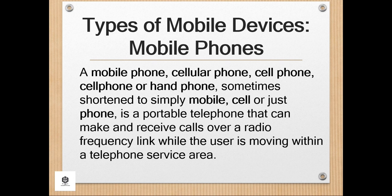In addition to telephony, digital mobile phones support a variety of other services such as text messaging, MMS, email, internet access, short-range wireless communications like infrared or Bluetooth, business applications, video games, and digital photography. Mobile phones offering only those capabilities are known as feature phones. Mobile phones which offer greatly advanced computing capabilities are referred to as smartphones.